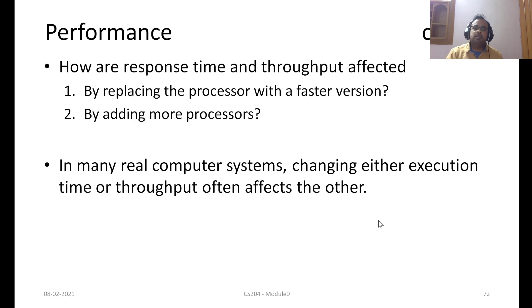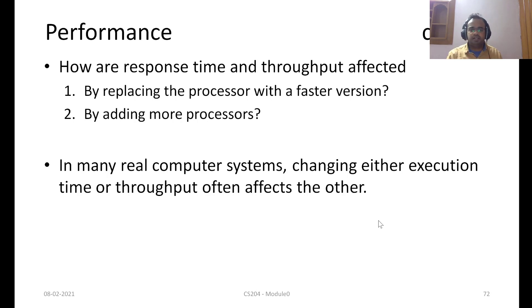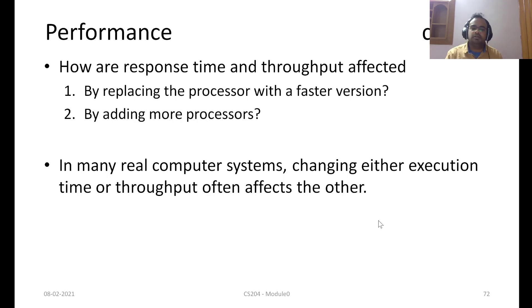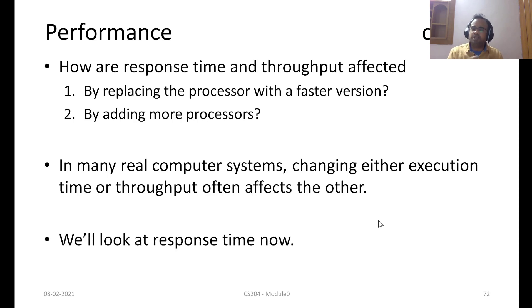For example, when replacing the processor with a faster one: if we have 10 tasks that earlier took 10 seconds on the older processor, and the newer processor takes half the time, the same 10 tasks would take 5 seconds — so throughput has also increased. There is an interplay between execution time and throughput. We'll start by looking at response time now.